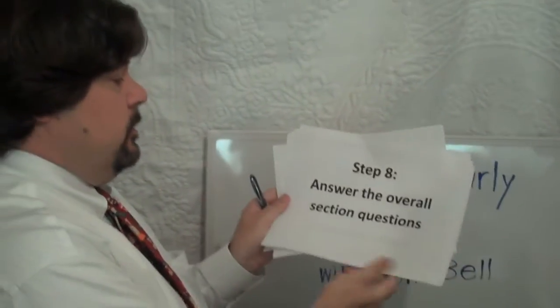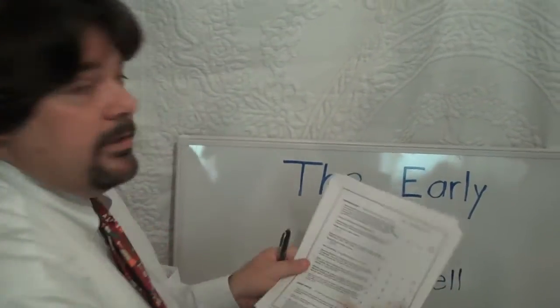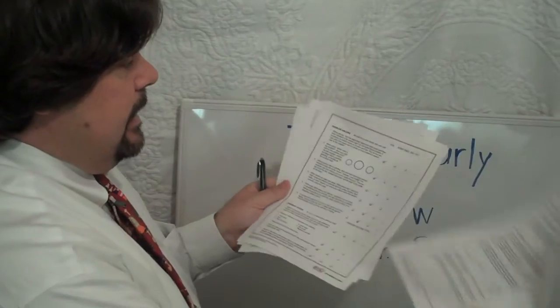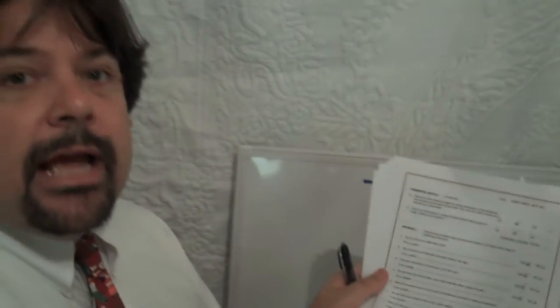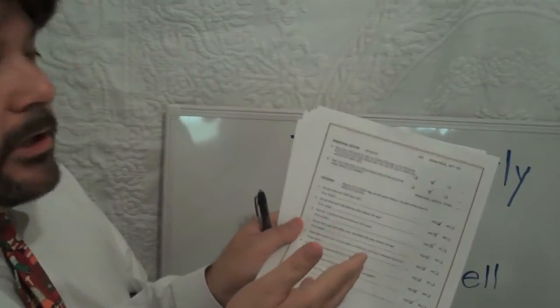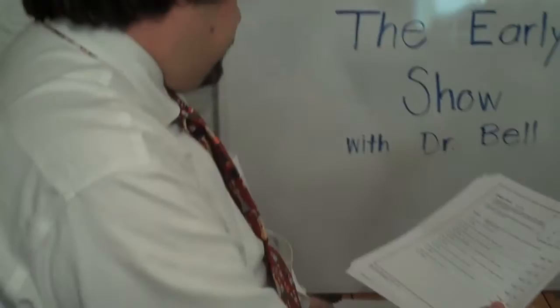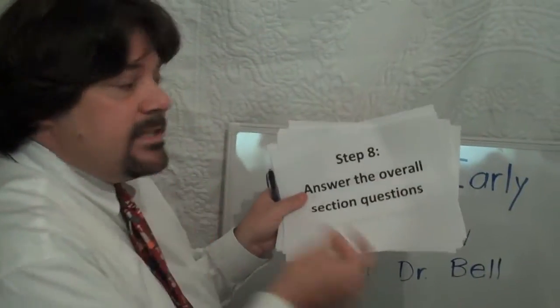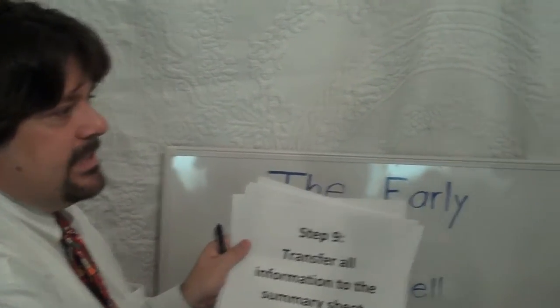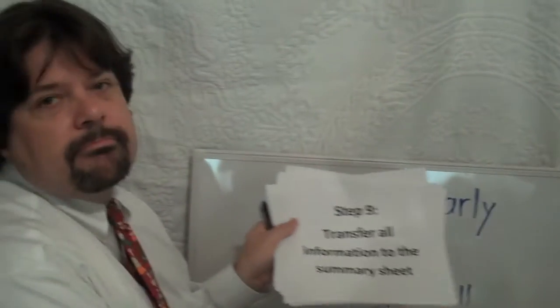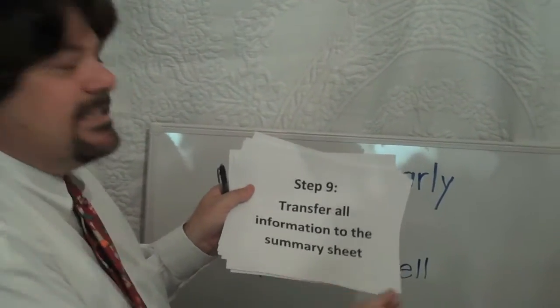Then you move on to step A, which is to answer the overall questions. We're going to fast forward here — we're going to pretend I filled in all those numbers so we can speed forward. Here's the overall section. It asks important questions that might not have a straightforward answer, but you need to answer them to the best of your ability or ask the parent: Can your child hear? Do you think they hear like other children? See like other children? Those types of things. And then we get to step nine — see how quickly it's done? It's so easy.